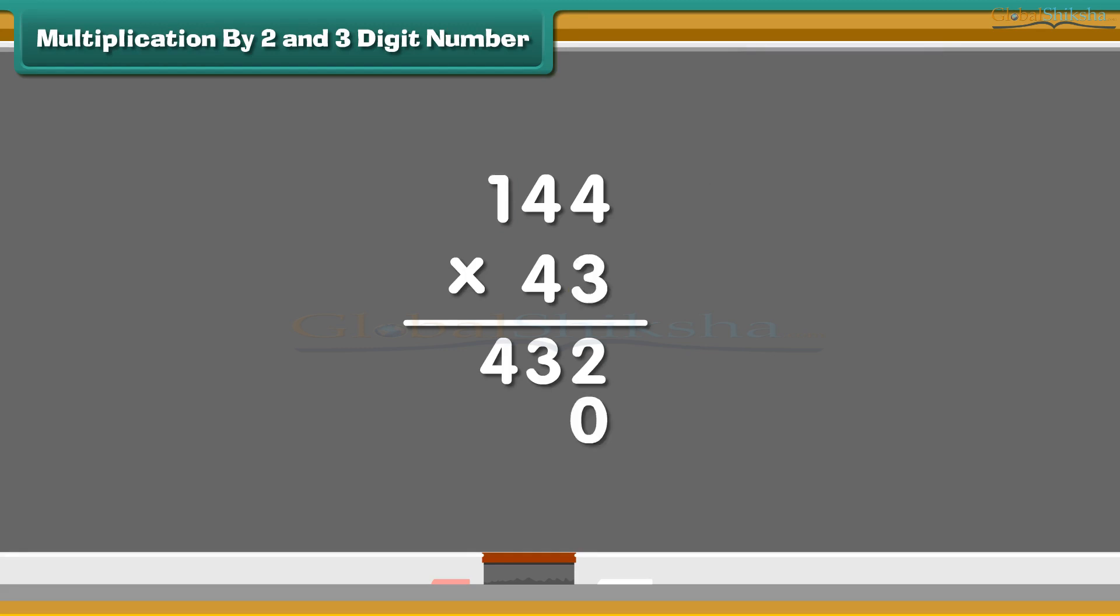Now add a 0 on 1's place and multiply 4 from the number on 1's place. 4 times 4 is 16. Write 6 in 10's place and carry the 1 forward to the 100's place. Multiply 4 with the number 4 on the 10's and add 1 which was carried forward. Write 7 in the 100's place and carry the 1 forward to the 1000's. Multiply 4 with the number 1 on 100's and add 1 which was carried forward. Write 5 in the 1000's place. Now add the 2 values. We get 6192. So 144 multiplied by 43 is 6192.